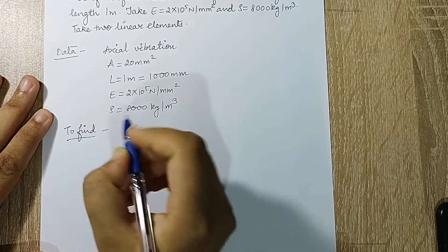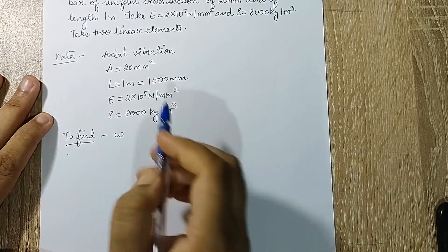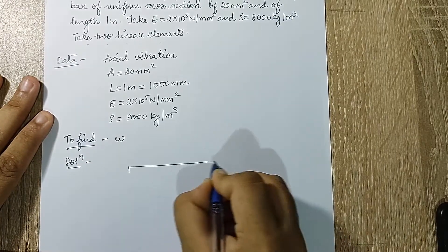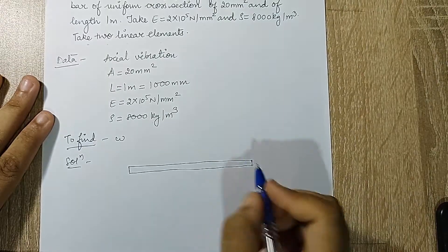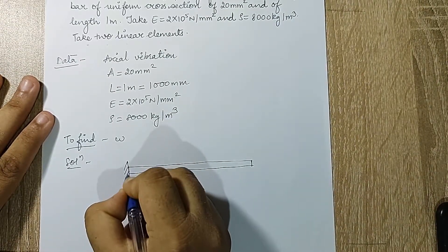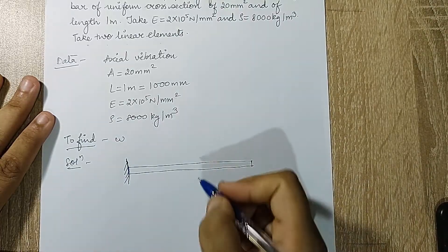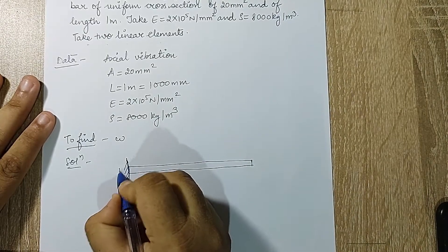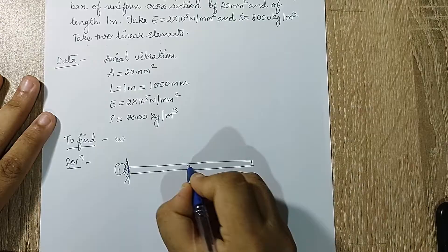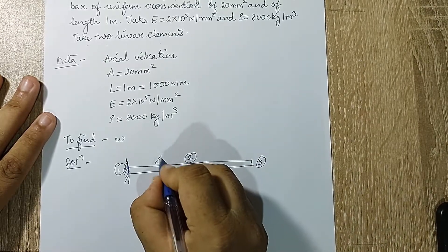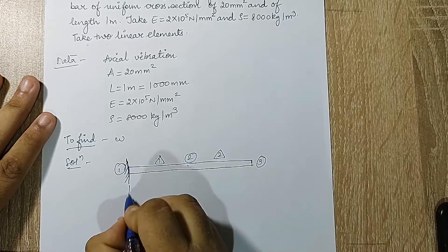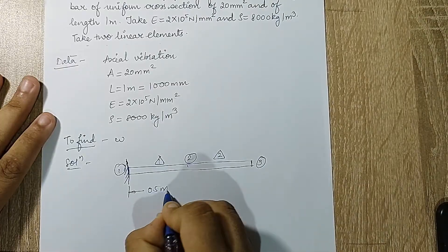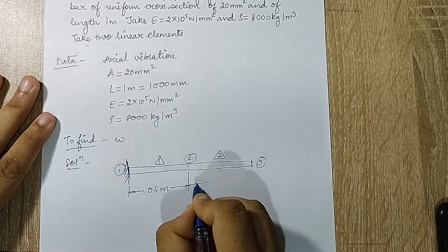We need to find the natural frequency ω, and we are told to take two linear elements. For axial vibration, one side is fixed and the other is free. Drawing the bar: node 1, node 2, node 3, giving two elements 1 and 2. Since L = 1 m, each element has length 0.5 m.